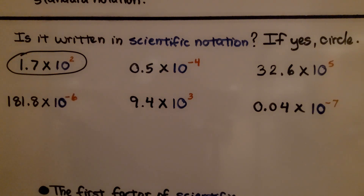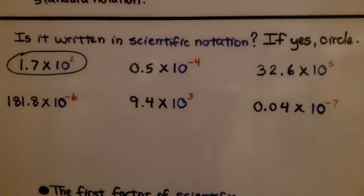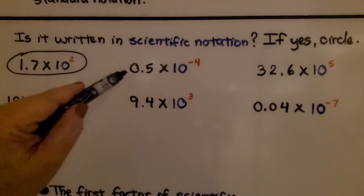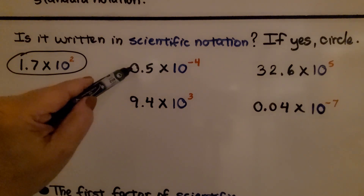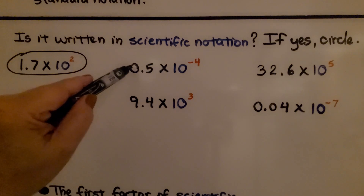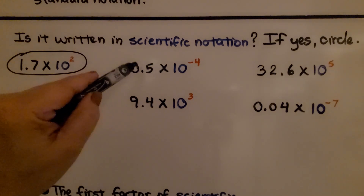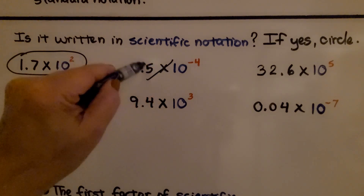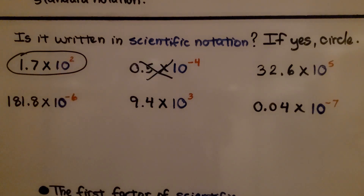As I said, we can quickly check for the pattern: digit, decimal point, digit. Here we have a zero — that doesn't count. It's got to be greater than or equal to 1, so that's not scientific notation.